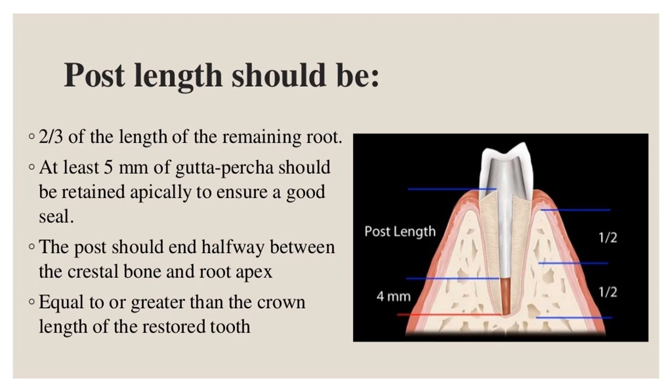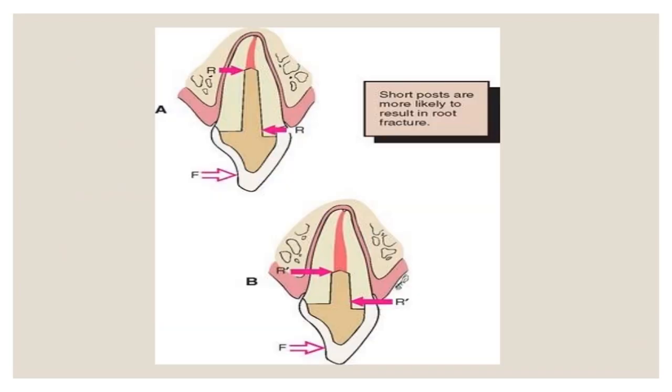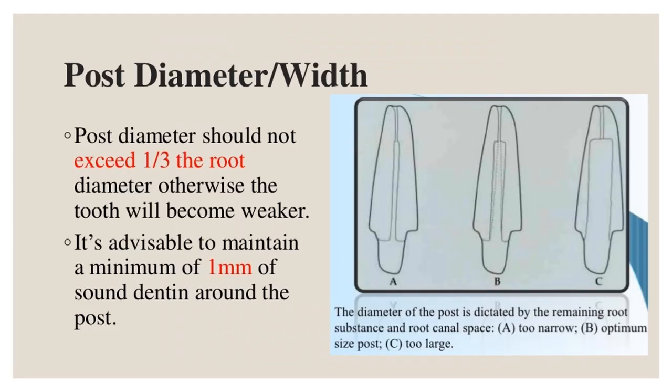At least 5 millimeters of gutta-percha should be retained apically to ensure a good seal. The post should end halfway between the crestal bone and root apex, equal to or greater than the crown length of the restored tooth.